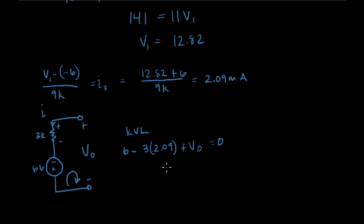So V0 then equals 3 times 2.09 which is 6.27 minus 6. And so the voltage across that part of the circuit then is 0.27 volts. Hope that was helpful.